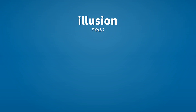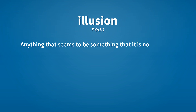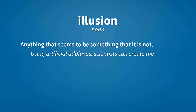Illusion. Noun. Anything that seems to be something that it is not. Using artificial additives, scientists can create the illusion of fruit flavors in food.